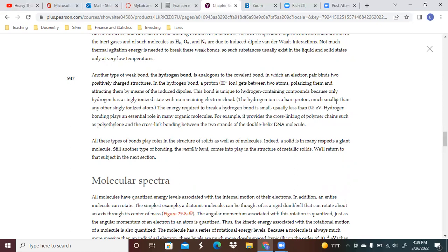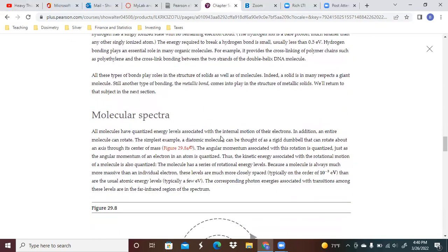The hydrogen ion is a bare proton, much smaller than any single ionized atom. The energy required to break the hydrogen bond is so small, usually about 0.5 eV, and hydrogen bonding plays an essential role in many molecules. It provides the cross-linking of polymer chains such as polyethylene and the cross-linking between two strands of the double helix DNA molecule.